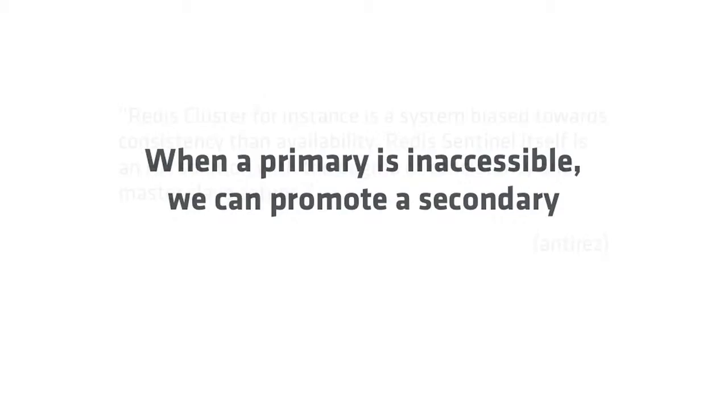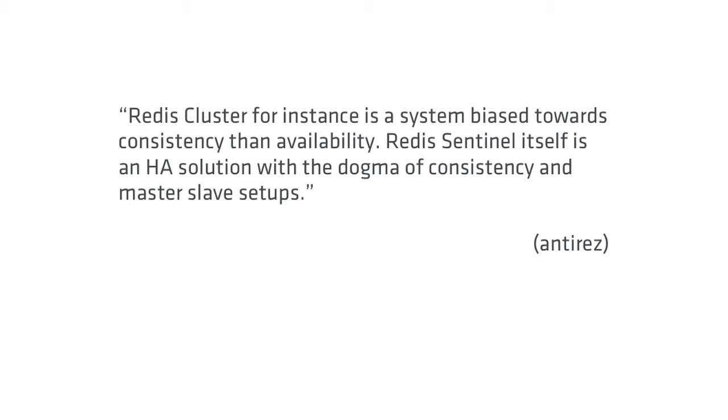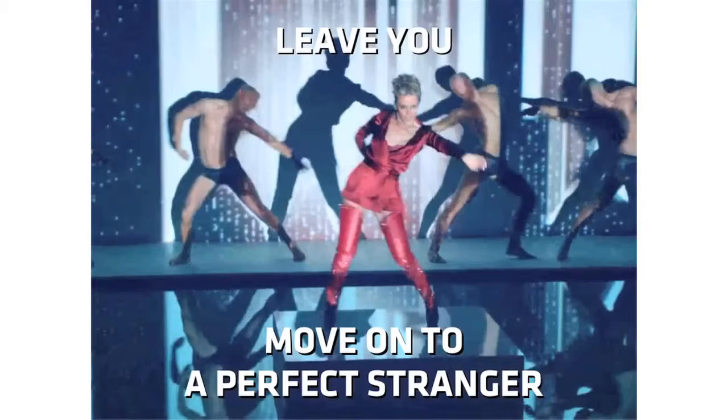What happens when the master fails? You can promote one of the secondaries because it's got a copy of that data. Redis Cluster is biased towards consistency rather than availability. It's an HA solution based on Redis Sentinel. Redis Sentinel is the side-along program that watches all the masters — it will say 'this primary is inaccessible, I'm voting to exclude it from the cluster, we're going to try and reach consensus on a new primary to elect.' Then all the clients need to go talk to this new primary because it's the authoritative owner of your data.